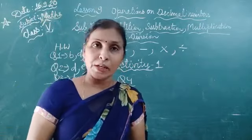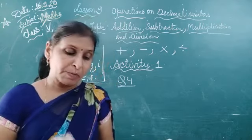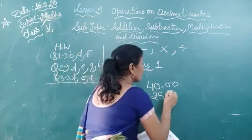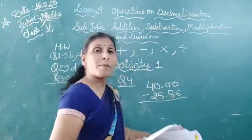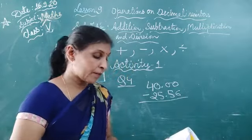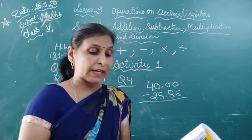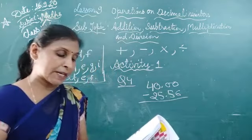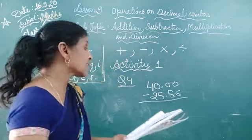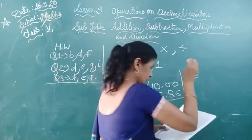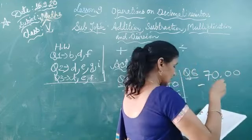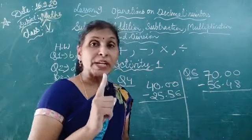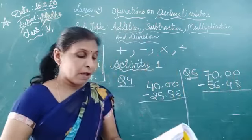Now question number 4, what should be subtracted from 40 to get 25.56? You have to do 40.00 minus 25.56. You can subtract, you know how to do it, so you will do it yourself. Question number 5, find the sum of these two. You have to add them, we've done so many sums, so you will do this yourself. Question number 6, what should be added to this to get this? You have to subtract. Question number 6, you will do 70.00 minus 56.40.